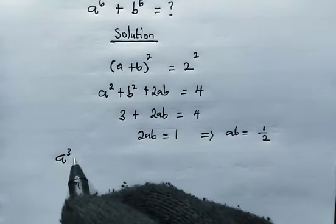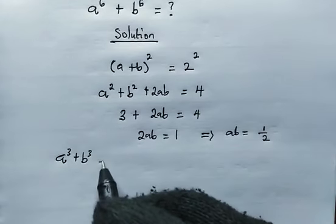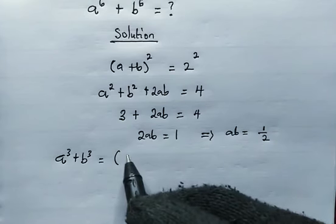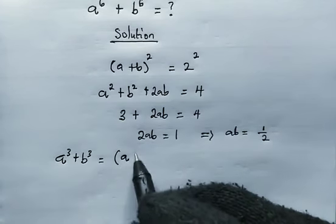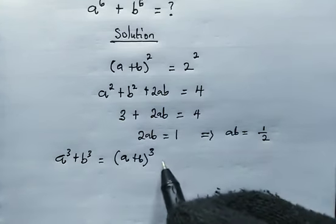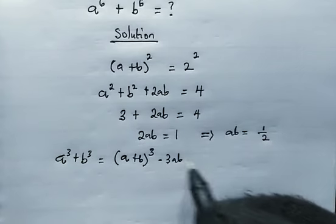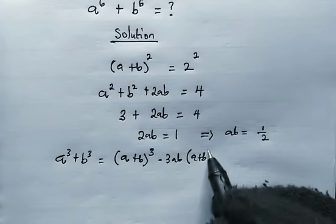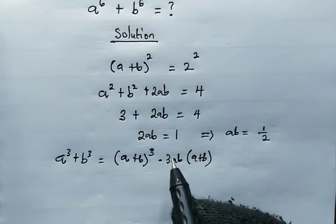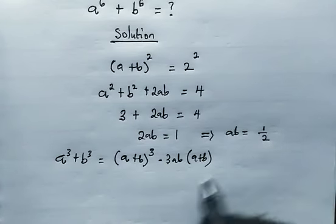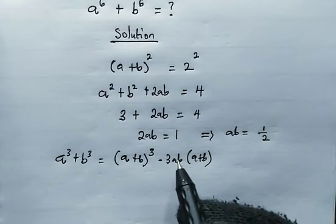So here, a cubed plus b cubed is given by the following property or formula that this equals a plus b cubed minus 3 times a times b into bracket a plus b. So you can see the reason why a times b's value is very helpful. You can see it has come up here.